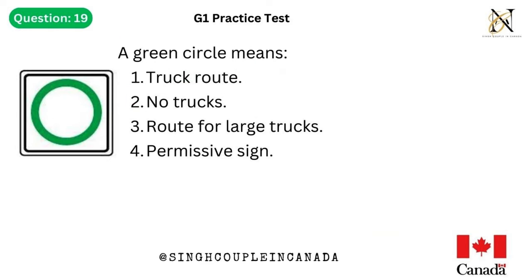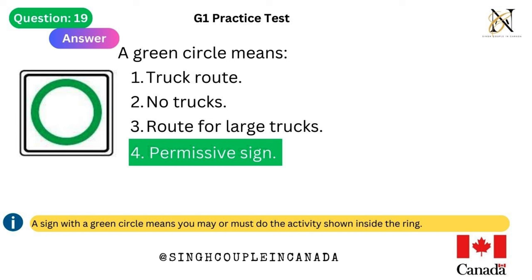Question 19. A green circle means: 1. Truck route. 2. No trucks. 3. Route for large trucks. 4. Permissive sign. Answer is 4. Permissive sign. A sign with a green circle means you may or must do the activity shown inside the ring.